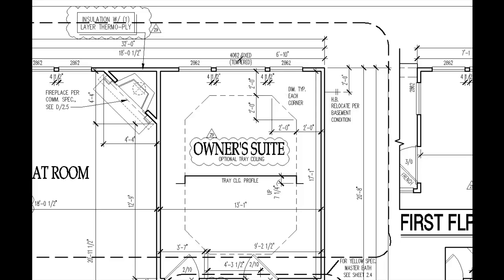The first thing we need to do is identify the overall length of our wall, which we have established as the section of wall being bookended by these two intersecting walls. We can use this 13-foot 1-inch dimension, but we need to add the thickness of our two walls because this dimension is to the interior face. Our walls are constructed of 2x4s, and 2x4s have a nominal thickness of 3½ inches, so we add a total of 7 inches to get an overall wall length of 13 feet 8 inches.